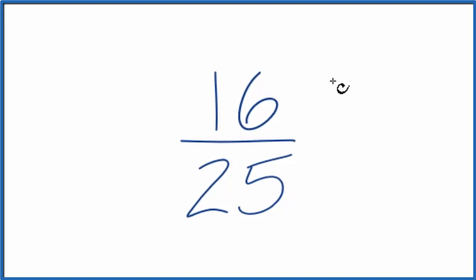So one way we can do that, we can just list the factors. One times 16, that would give us 16. Two times eight. Three times no. How about four times four? That would give us 16. And I think those are the factors.